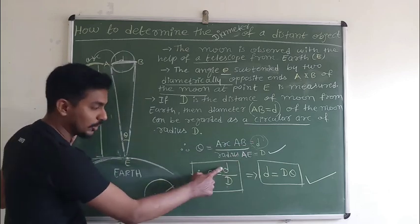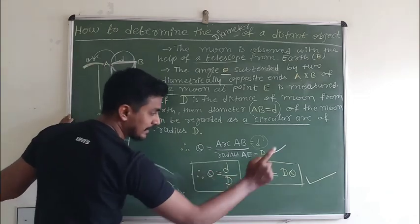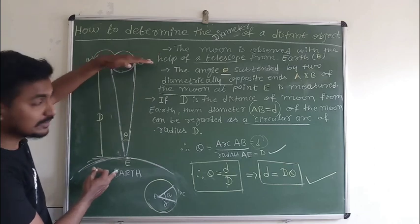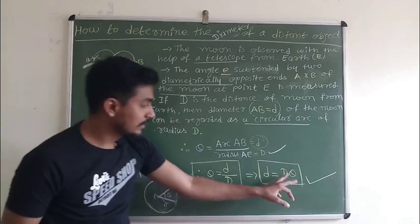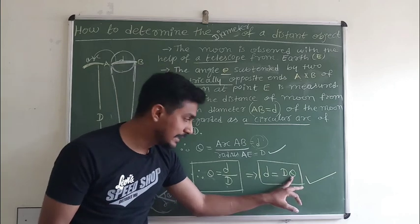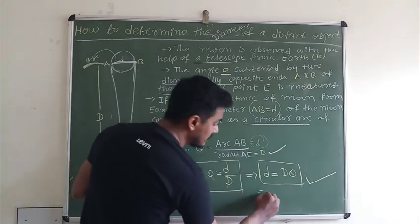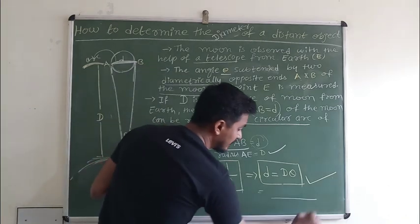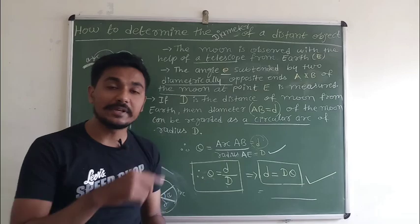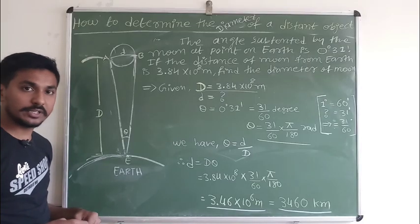Now I want small d, that is the diameter. So d equals D times theta. We know the distance D is 384,000 kilometers. This is the distance of the moon from the earth, and theta we can measure directly. With the help of this we can get our answer easily. So now we will measure the diameter of the moon.